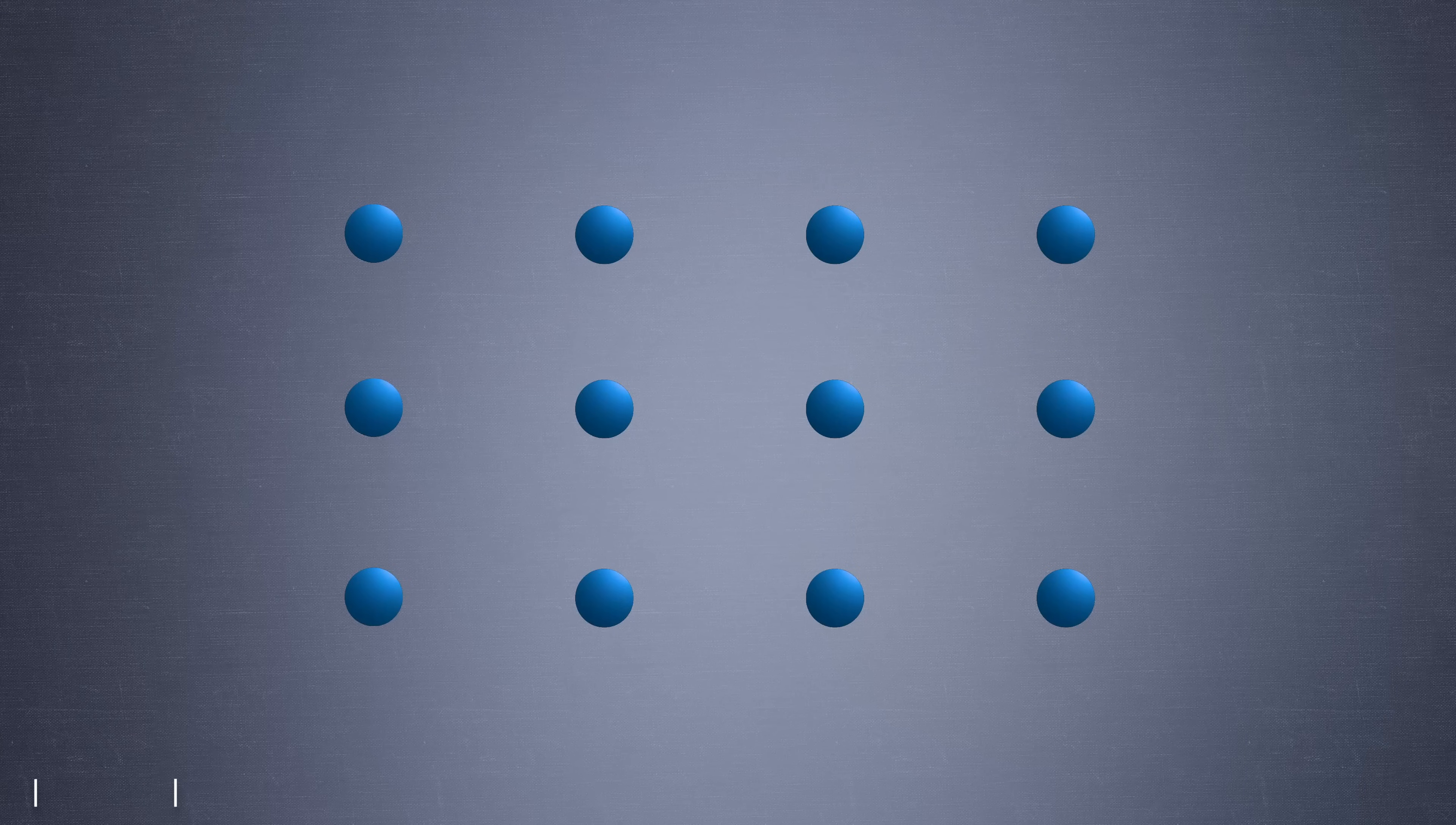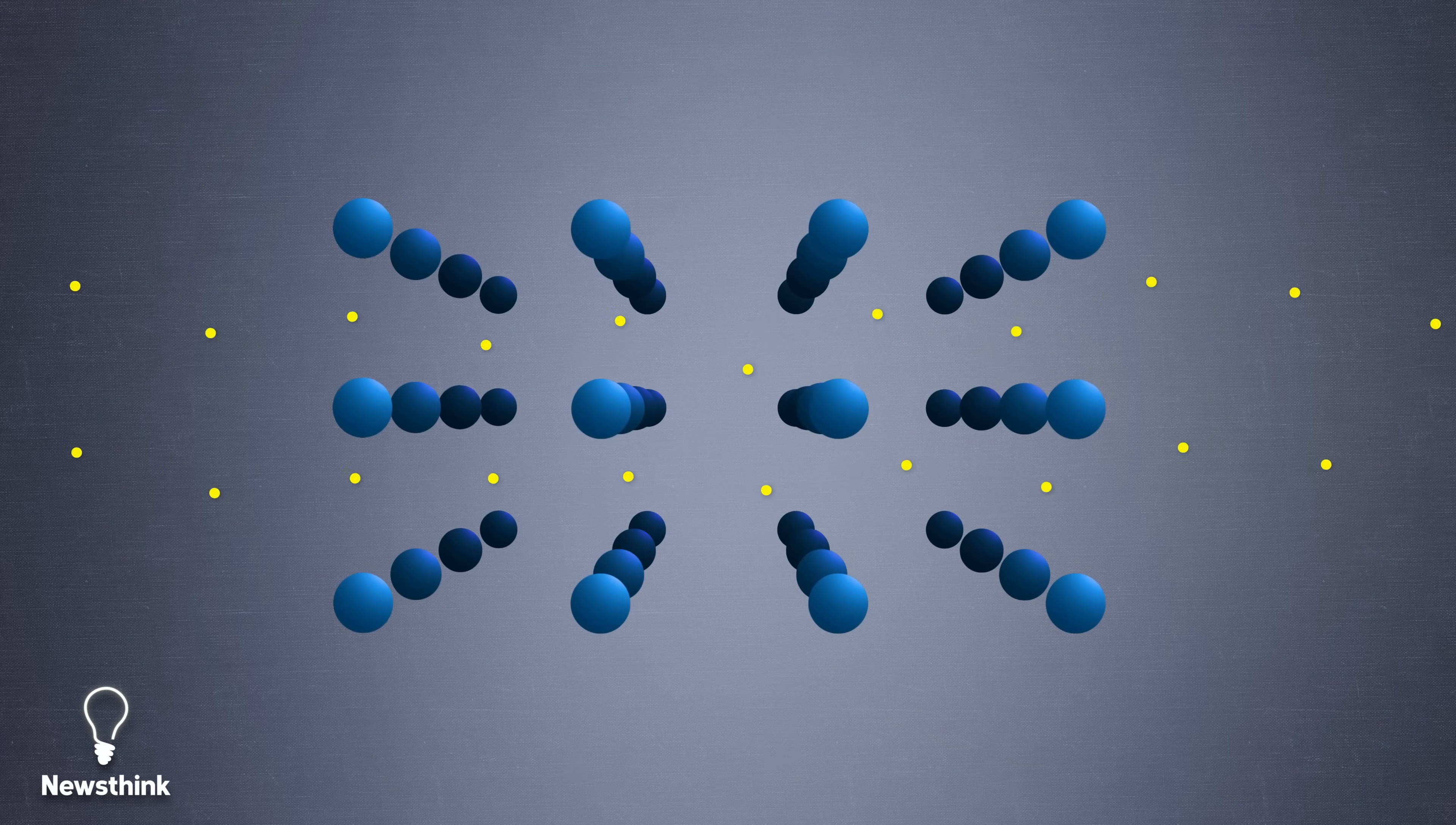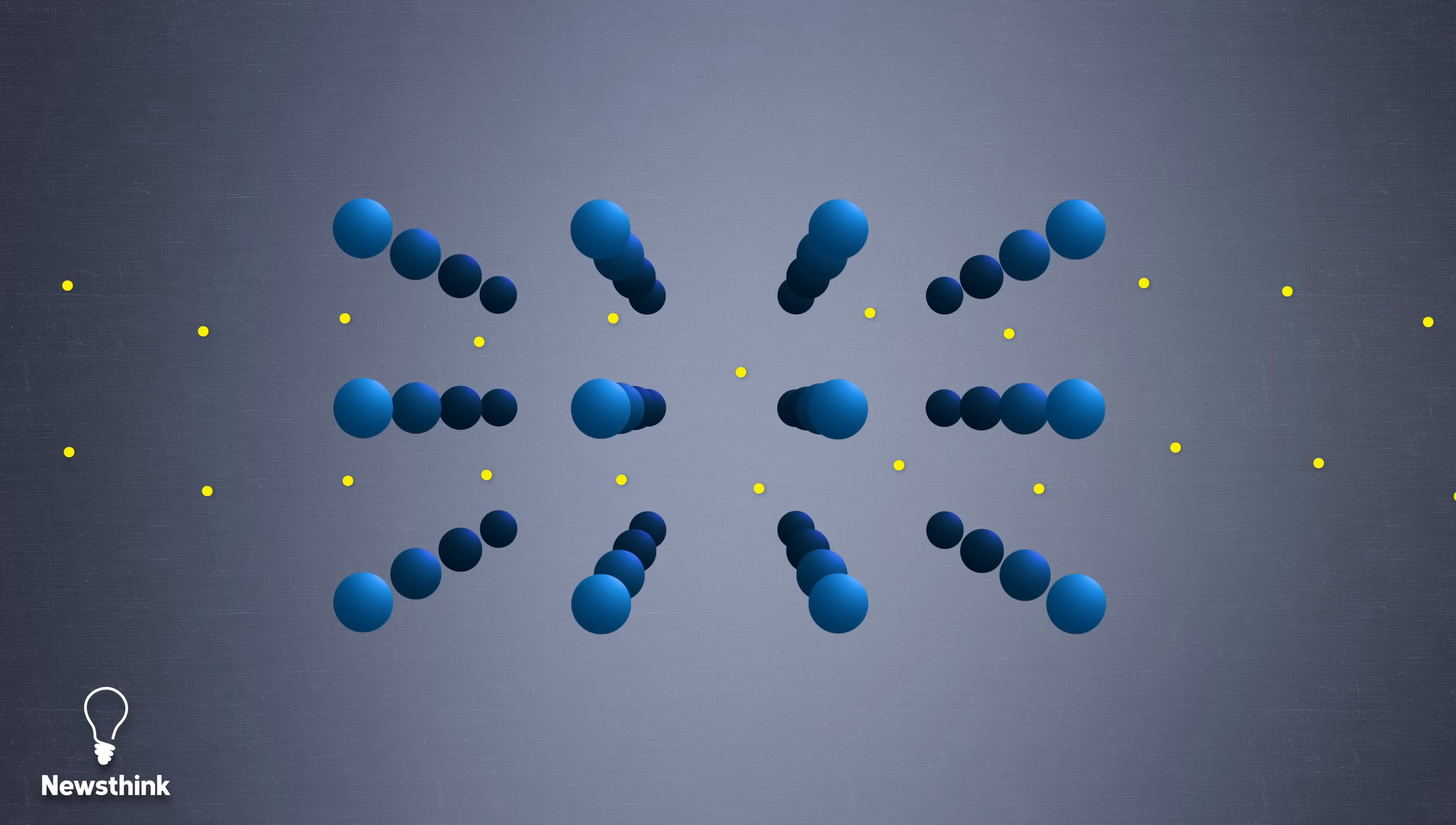On the other hand, superconductors allow electricity to flow without any energy loss, no matter the number of twists and turns. The electrons form pairs that are thought to exhibit quantum entanglement, enabling them to move in a synchronized, coordinated manner.